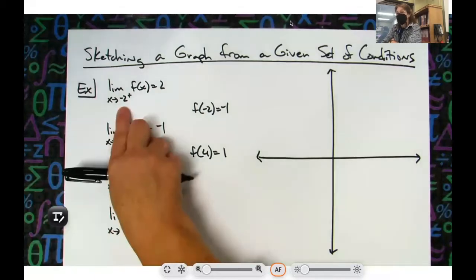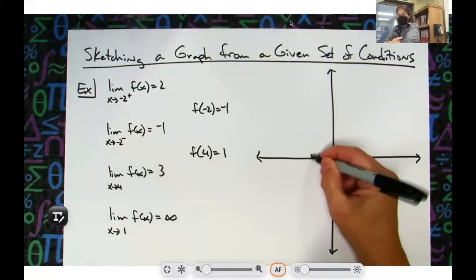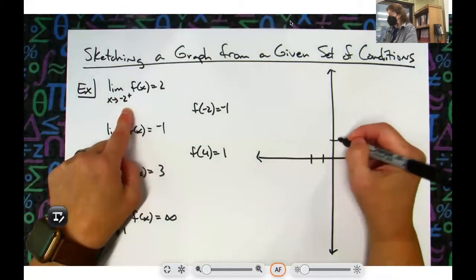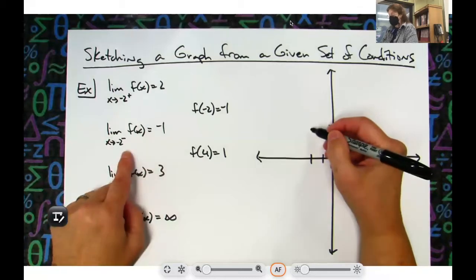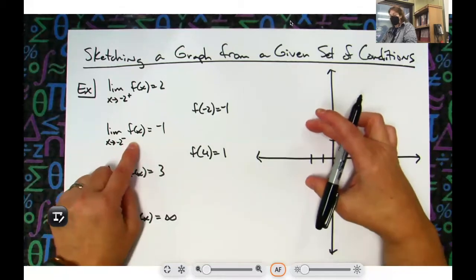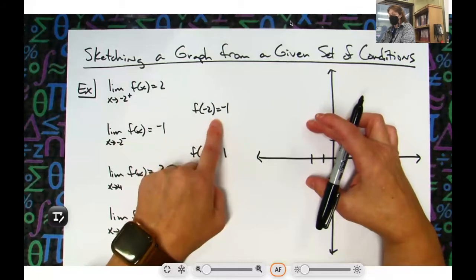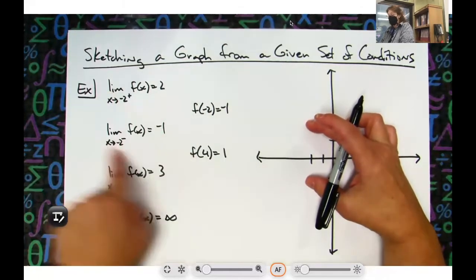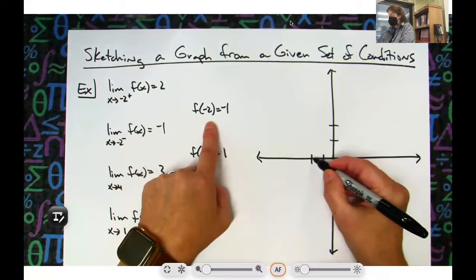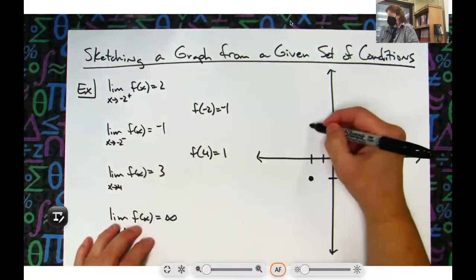As it approaches negative 2? Yeah, because we've got from the left and we've got from the right. So I know at negative 2, coming from the right I've got to be at 2, and then coming from the left I've got to be down here at negative 1. So I'm going to have something attached on both of these.